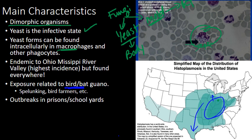What happens is you're exploring a cave, you pick it up on your shoes, it becomes aerosolized, and you inhale it — that's how it takes root. There have been reports of outbreaks in prisons and schoolyards. Rush actually investigated an outbreak at Cook County Jail where construction and excavation was kicking up the soil, and about five to six inmates developed pulmonary histoplasmosis. Basically anything that aerosolizes it causes the yeast to be breathed in, and that's how you wind up developing disease.